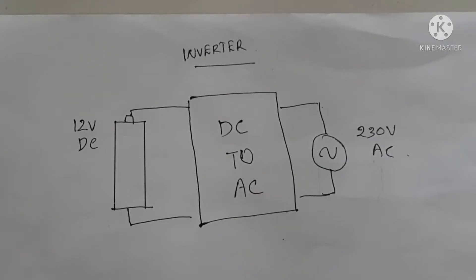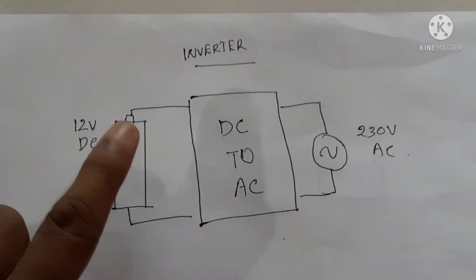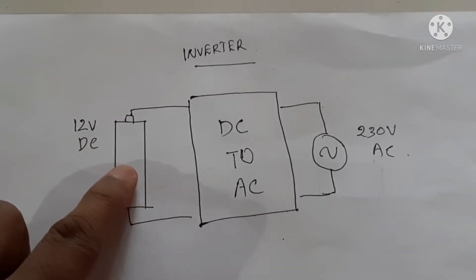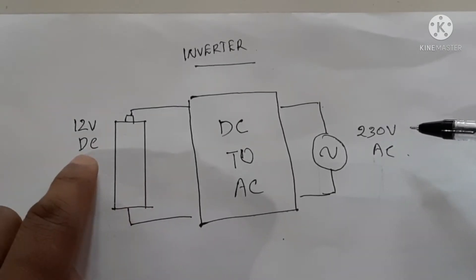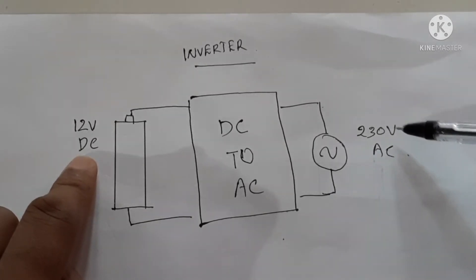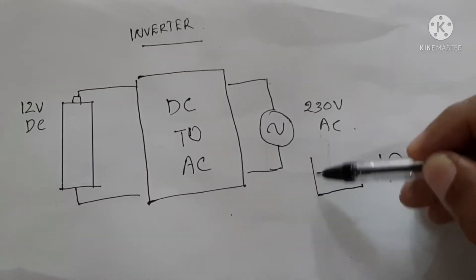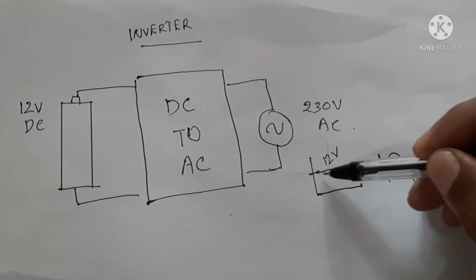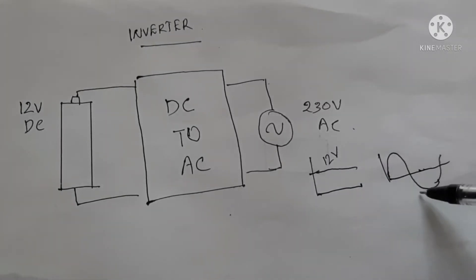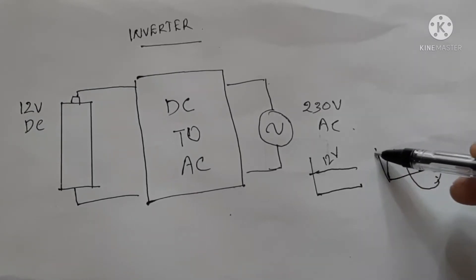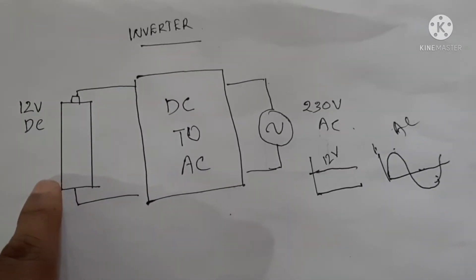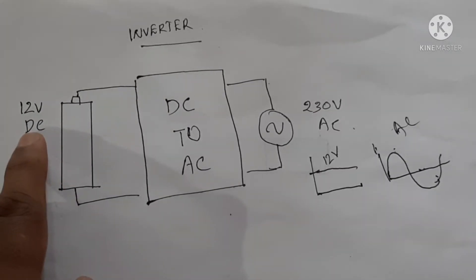Hello and welcome. Today we are going to see what is an inverter. An inverter is a circuit that converts a DC voltage to an AC voltage. If we have a 12 volt DC voltage, our household items mainly work on AC voltage, so this DC voltage has to be converted to AC. DC voltage means it is constant — 12 volt means a constant 12 volt — but AC voltage means it is a fluctuating voltage with positive and negative cycles.